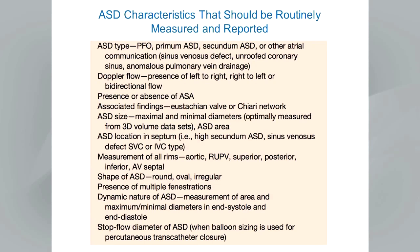Important characteristics of atrial septal defects that should be routinely measured and reported include: the type of ASD (PFO, primum, secundum, or other); presence or absence of anomalous pulmonary venous drainage; color Doppler flow direction (left-to-right, right-to-left, or bidirectional); presence or absence of an atrial septal aneurysm; other associated findings such as a prominent eustachian valve or Chiari network; maximum and minimum diameter of the ASD; area of the defect; and location of the ASD within the septum.